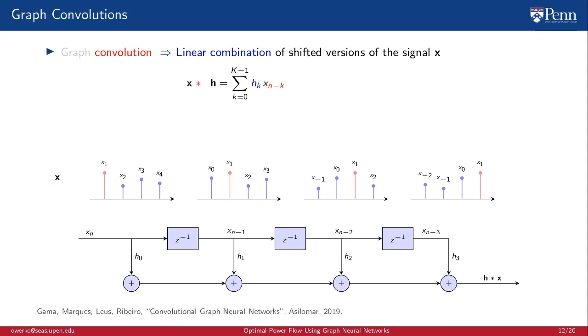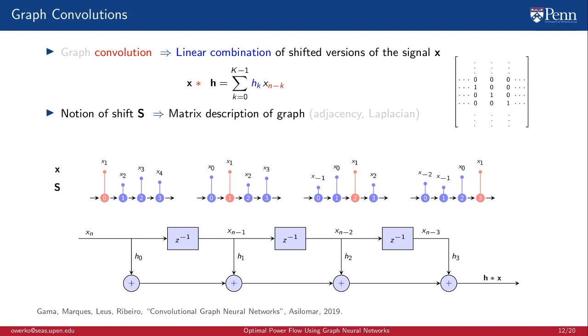A convolution is a linear combination of shifted versions of the signal x. We shift the signal through time, and for each shift, we weigh by a different coefficient h. If we want to extend this concept to graphs, we need to have a notion of shift. This notion of shift is defined in graph signal processing to be a matrix description S of the graph.